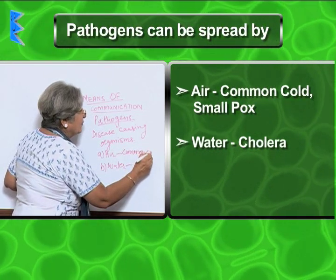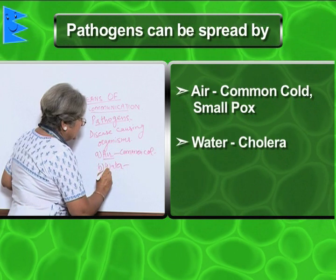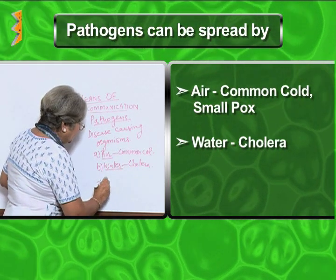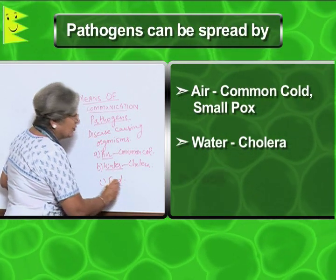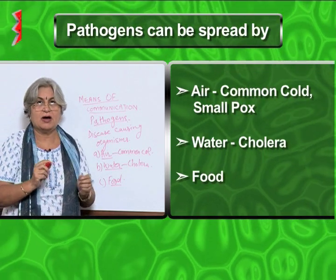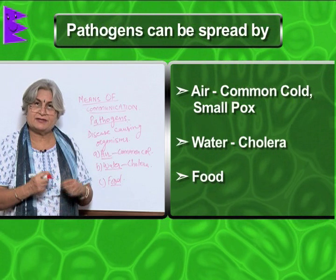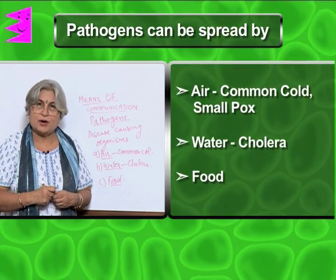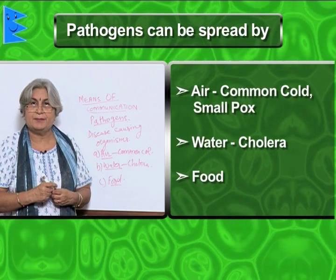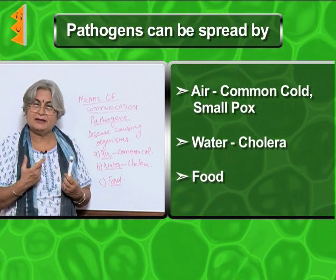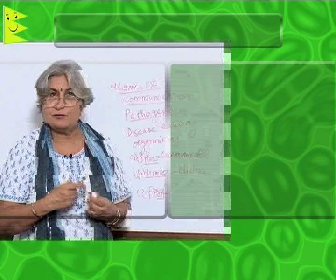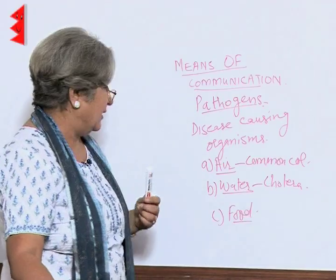Sometimes infection can also spread through food. Contaminated food can cause food poisoning. Similarly, if somebody eats pork that is not properly cooked, or comes from a piggery that is not hygienically maintained, tapeworm eggs can enter our body and we can get infected with tapeworms. So food is another source of infection.